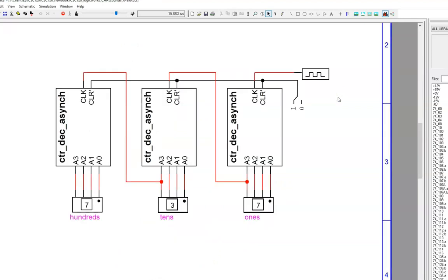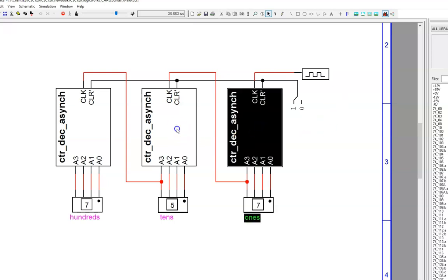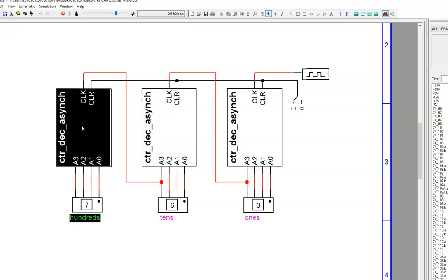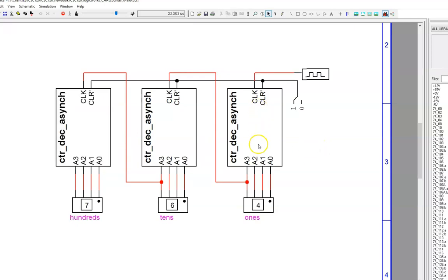A useful thing we can do with a decade counter, or any size counter, is to cascade them to count in higher orders of magnitude. This circuit features three decade counters condensed into device symbols. Notice how the rightmost, or least significant, counter cycles quickly through its count. Then, when it leaves 9 and recycles back to 0, the middle counter increases by 1.